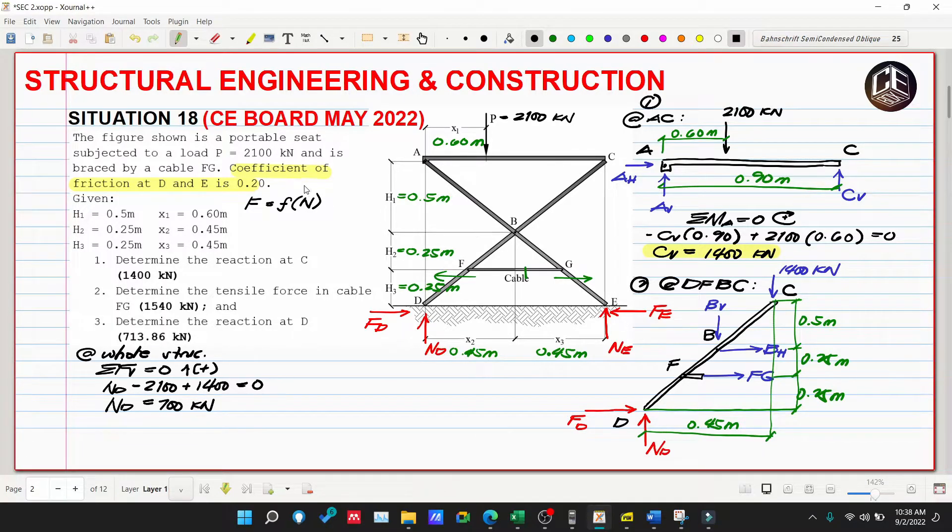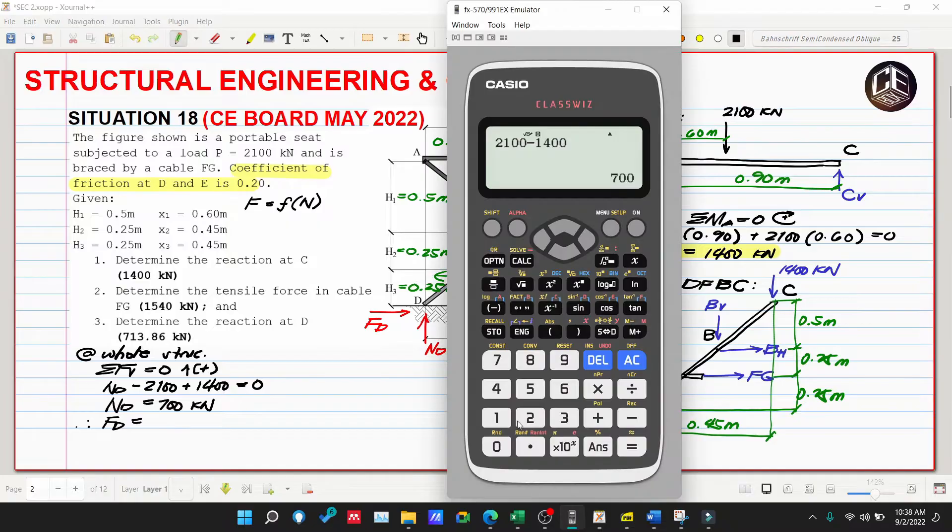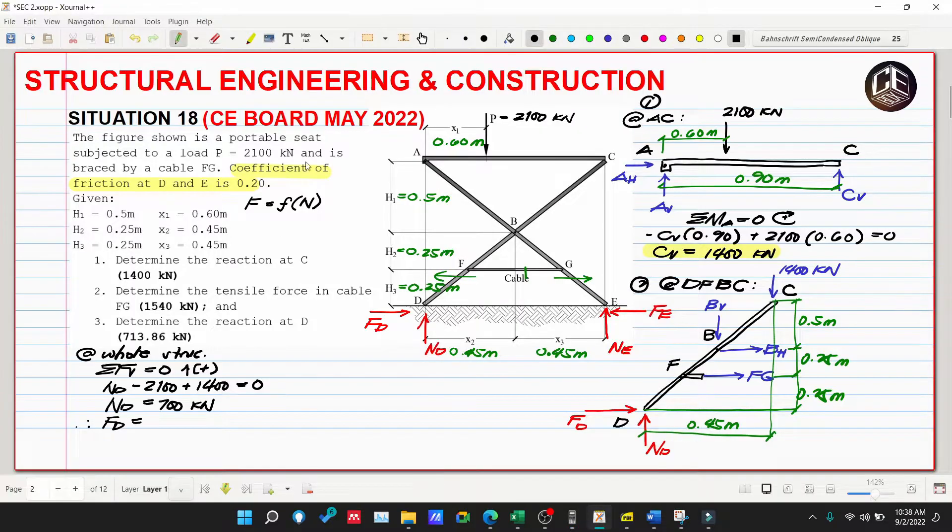Now we can get the frictional force FD. FD equals coefficient of friction 0.20 multiplied by 700, so FD is 140 kN.